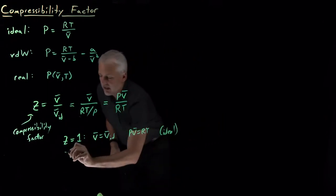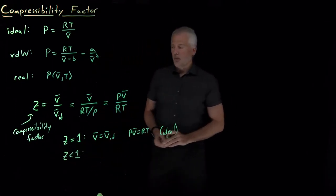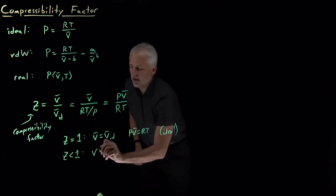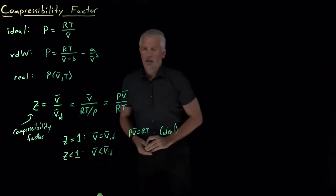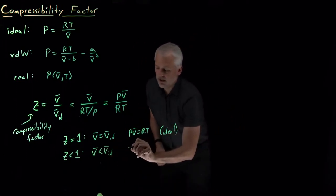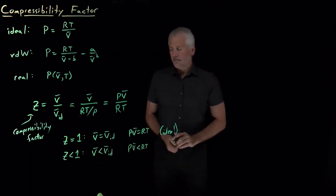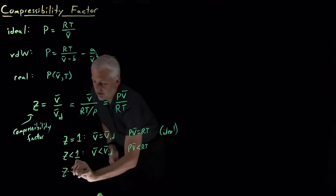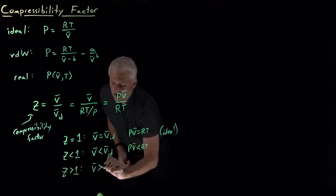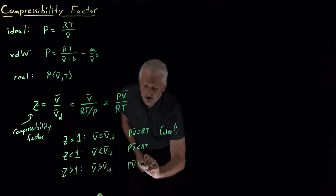If the compressibility factor is smaller than 1, because this ratio is less than 1, V̄ is less than the ideal, the gas takes up less volume than it would have if it were behaving like an ideal gas. The opposite is true if the compressibility factor is greater than 1—the gas is taking up more volume than an ideal gas would and PV̄ is bigger than RT.